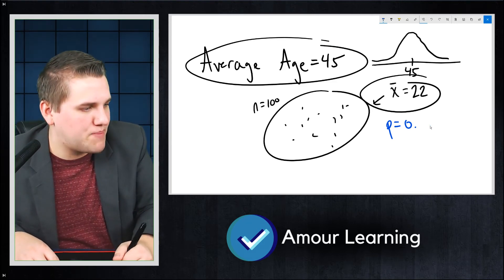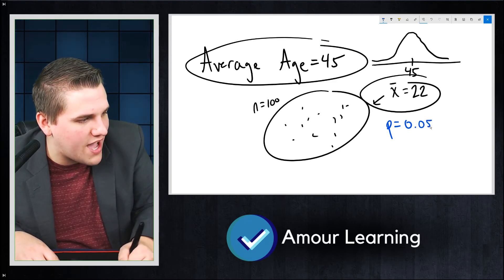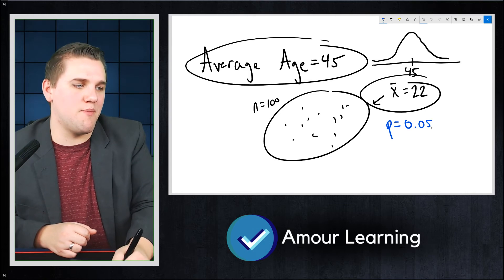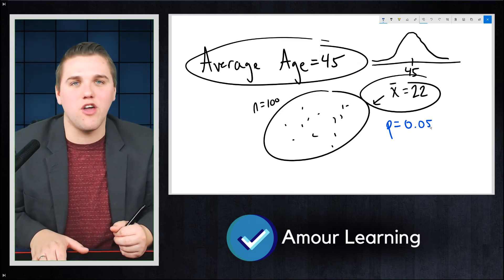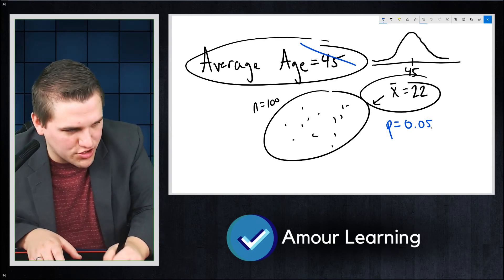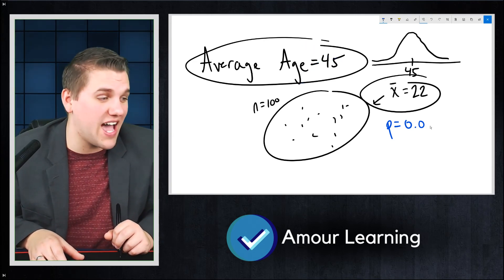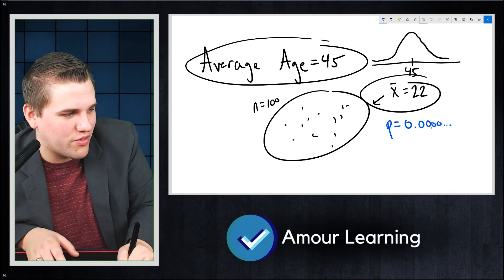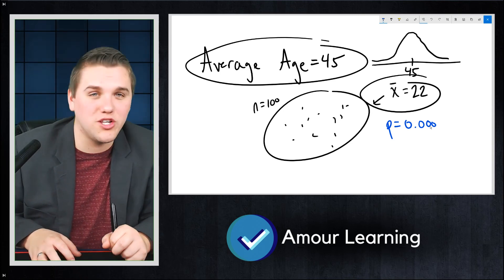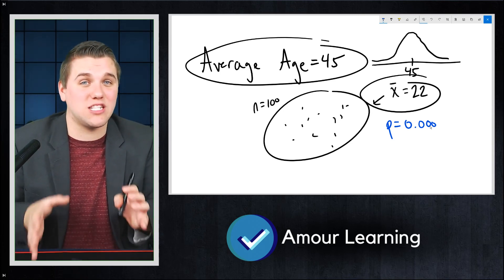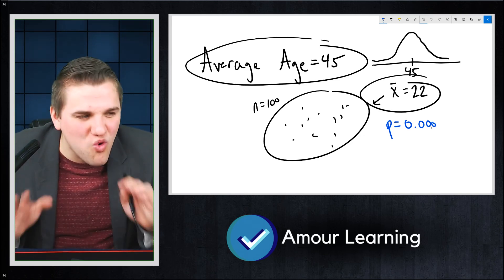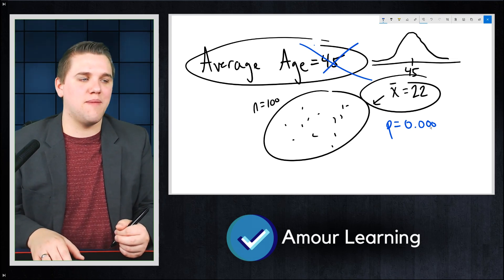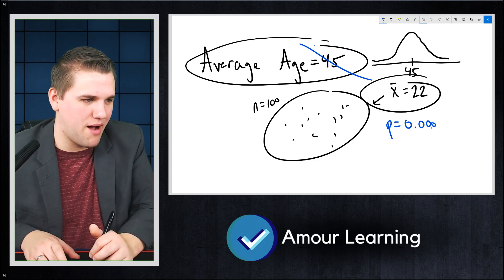Typically, a p-value of 0.05 or lower is considered too rare for the scientific community to still accept the claim. If your p-value is 0.05 or lower, you should probably reject it. Physics even has a lower p-value threshold — something like 0.000003 — meaning the result must be that rare before you straight up claim that the hypothesis is wrong.